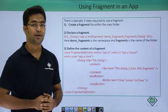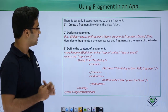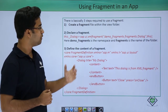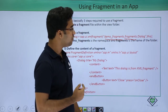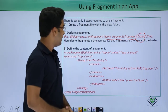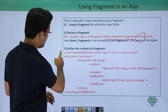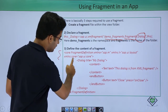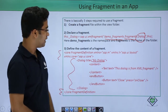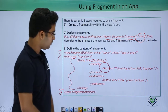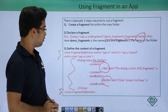Now let us see how to use a fragment in an application. There are three steps. The first step is to create a fragment file within the view folder, and we declare it using sap.ui.xmlfragment. The namespace is demo fragments, followed by the folder name — here the folder is named fragments and this is the fragment name. The third step is to define the content of the fragment. I have used a dialogue with the title 'my dialogue', containing a text and a button as the end button.